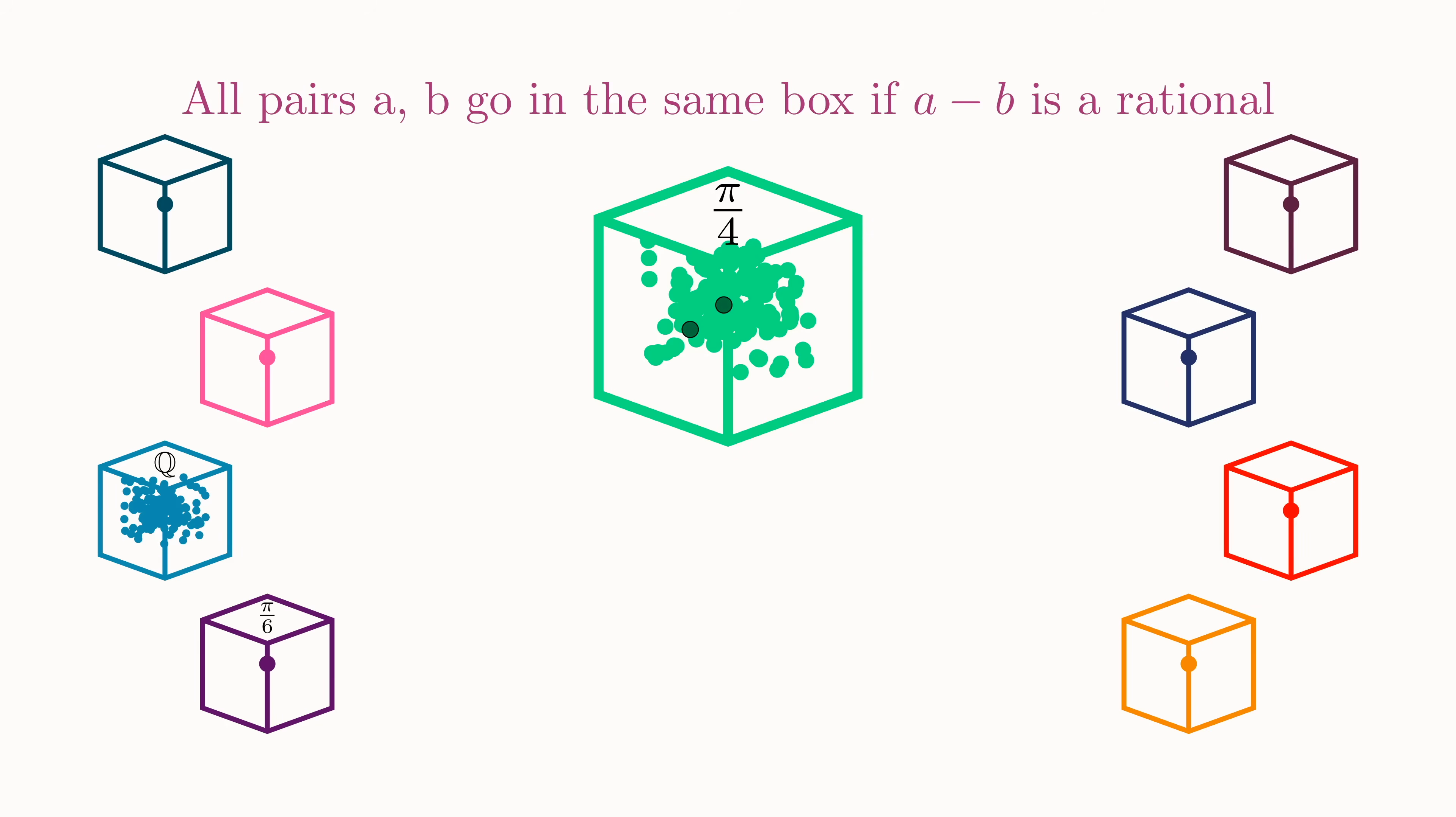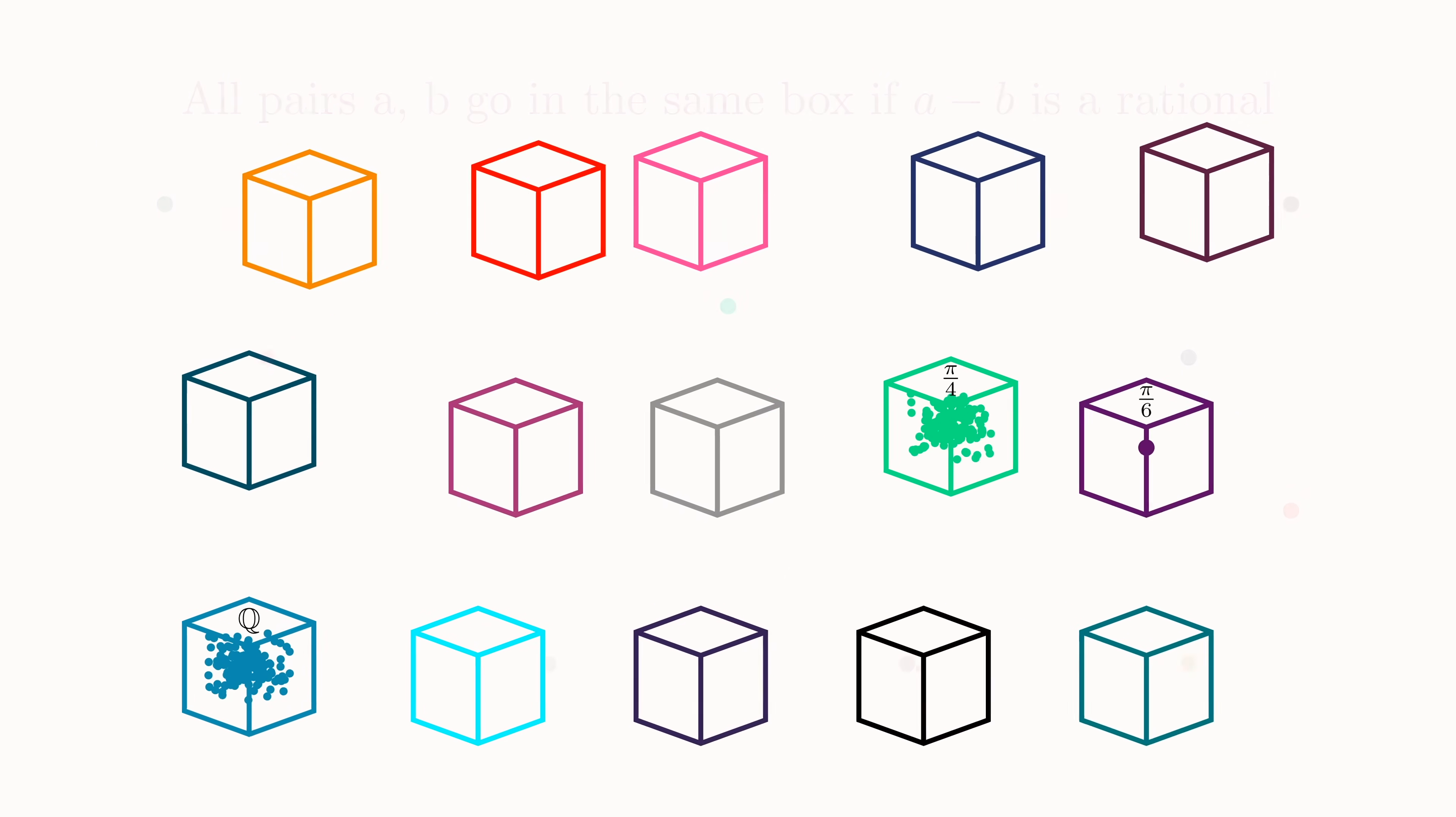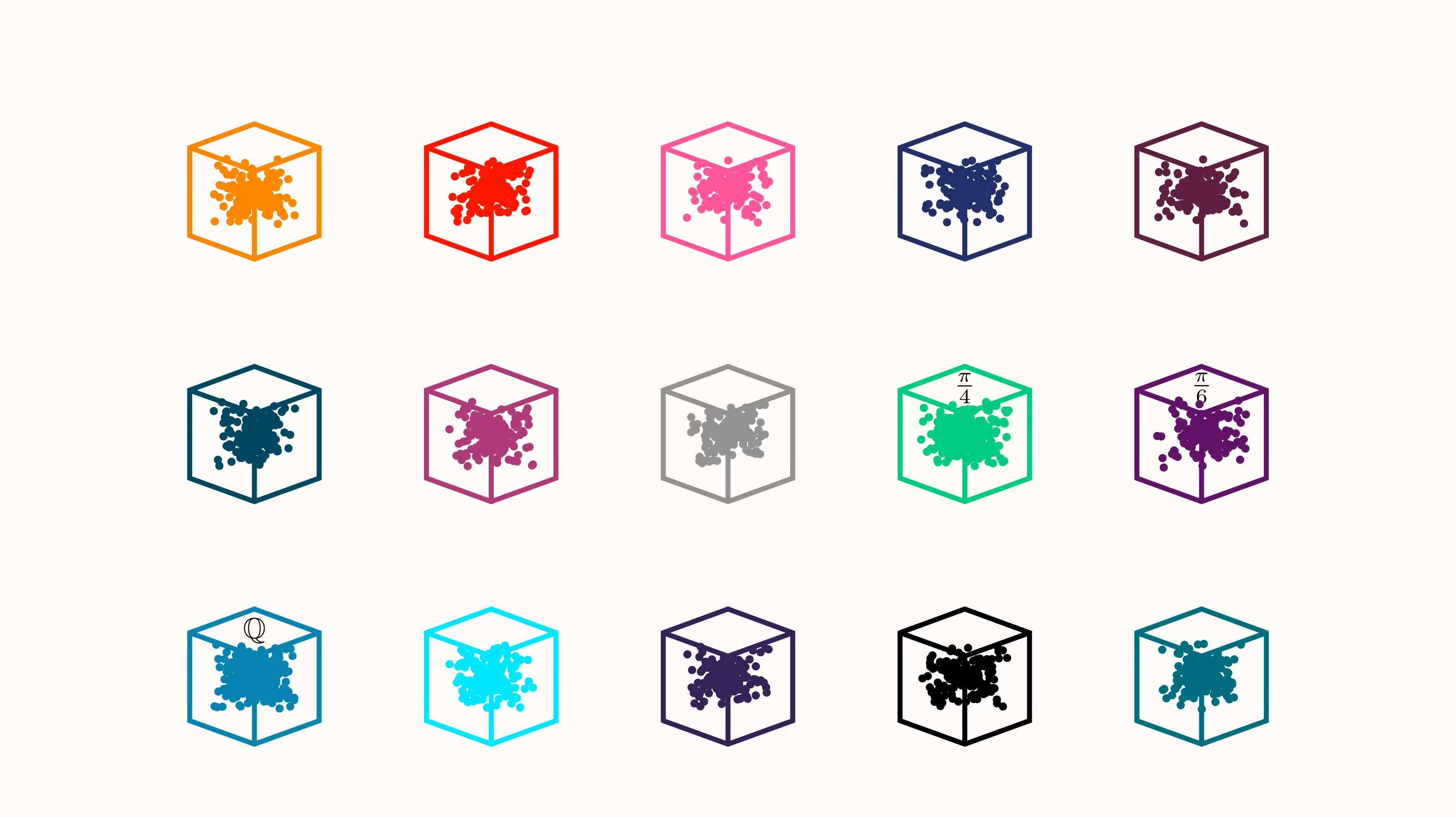By repeatedly applying this simple rule, we can sort out all the numbers in the entire unit interval into different boxes. Each number will have one and only one box that it belongs to. The technical phrase here is that we have partitioned the unit interval into different equivalence classes.